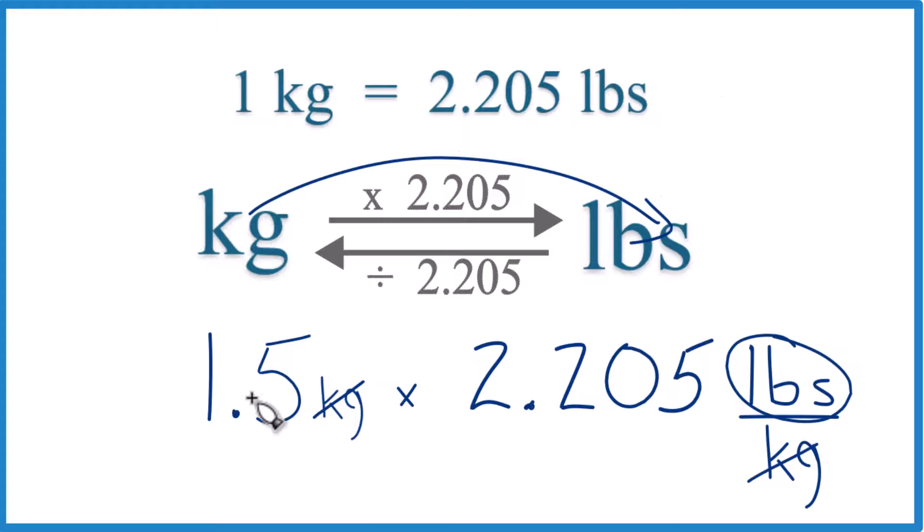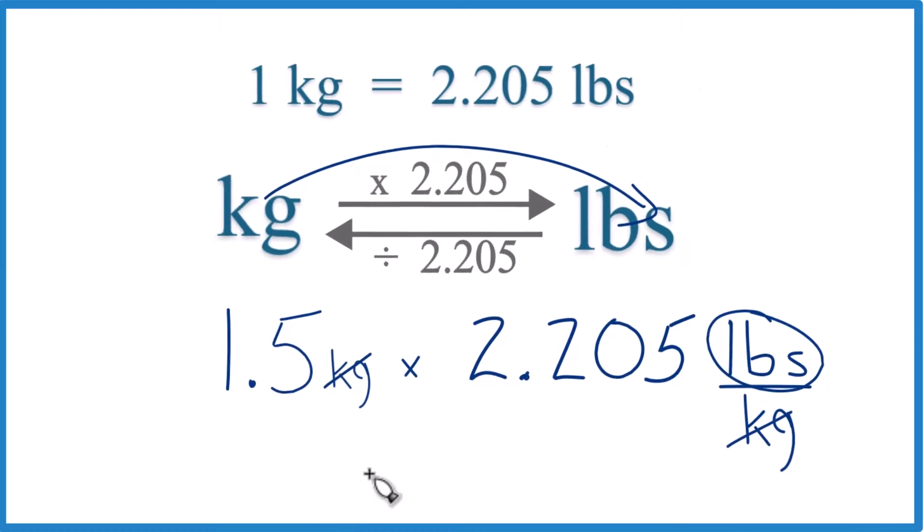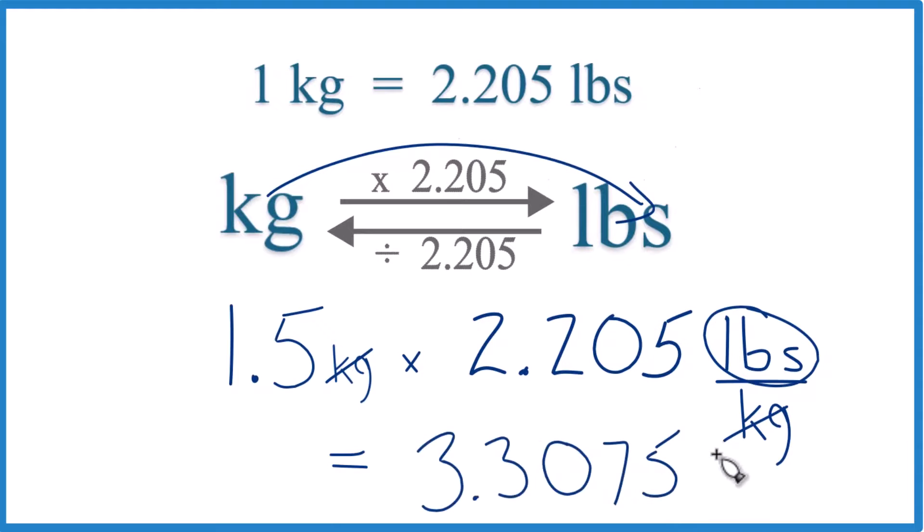So 1.5 times 2.205 pounds, that equals 3.3075. Let's round that to 3.31. And the units, those are the pounds. So that's it. That's how you convert 1.5 kilograms to pounds. This is Dr. B, and thanks for watching.